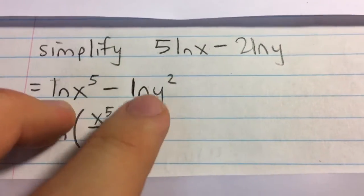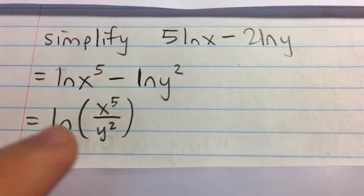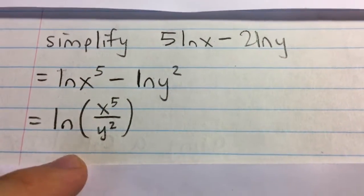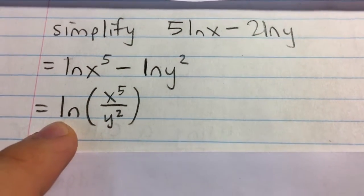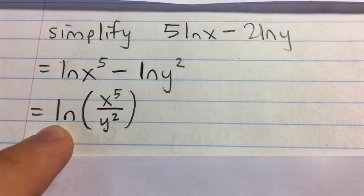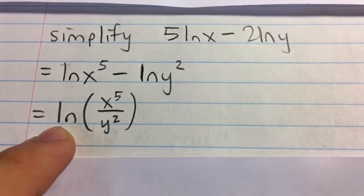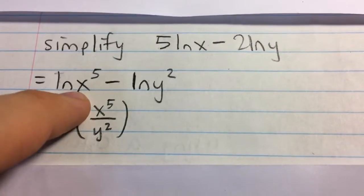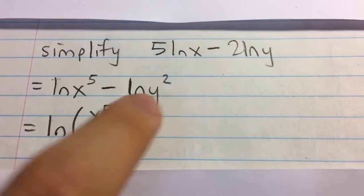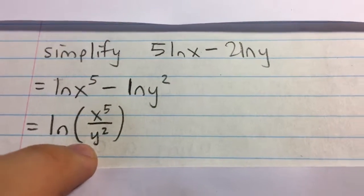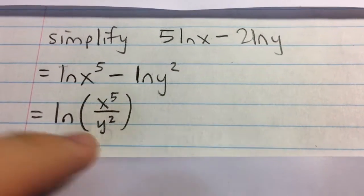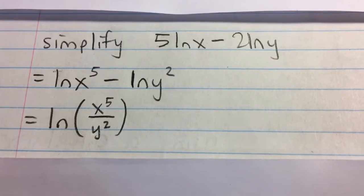We have the difference of two logarithms with the same base, so we can combine them. That's equal to ln of x to the fifth divided by y squared. That's our final answer.